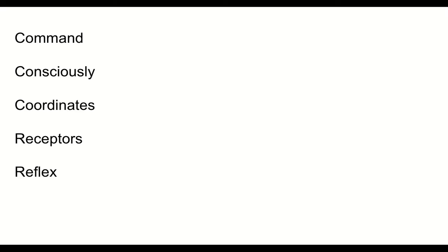Next, we have consciously. Consciously means to be done on purpose or deliberately. Next, we have coordinates or coordinating — to make different things work together effectively as a whole.